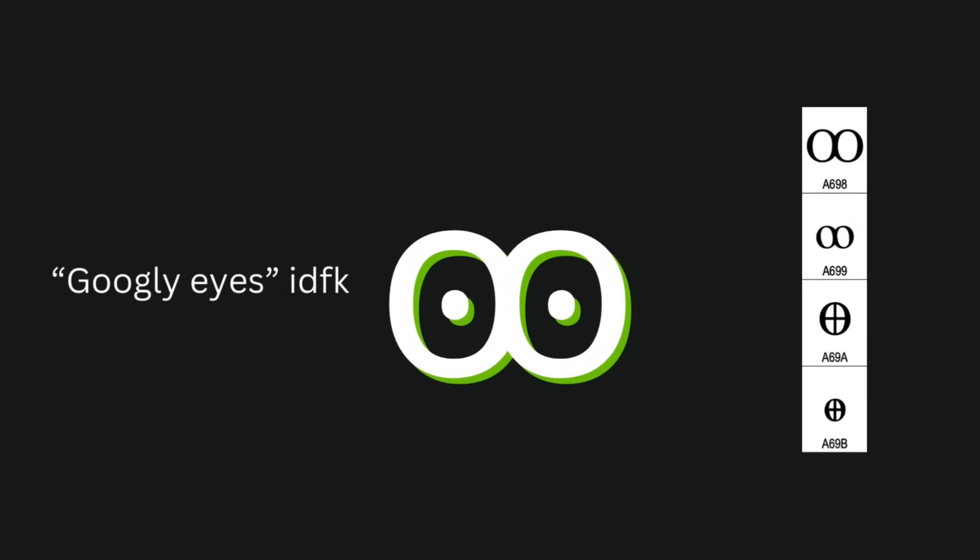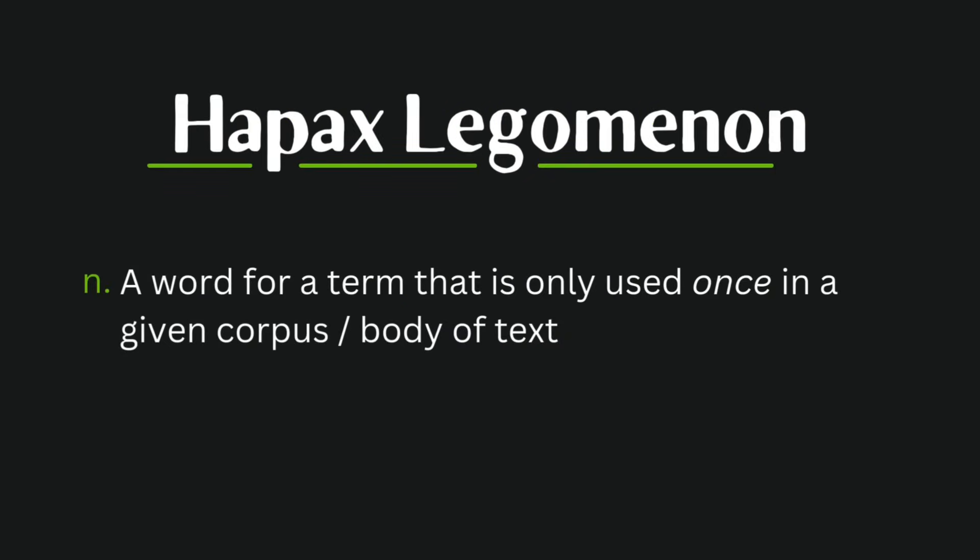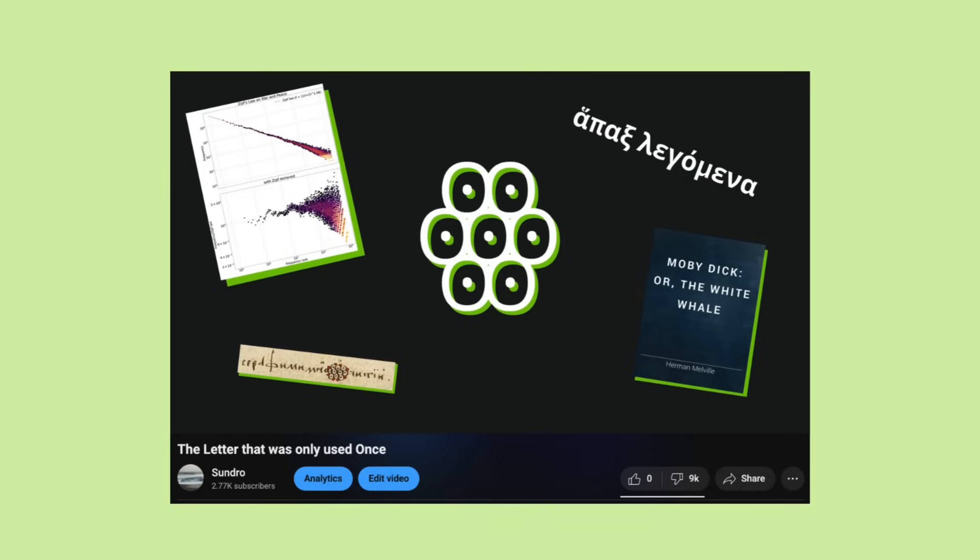But what really is the multiocular O? A hapax legomenon is used to denote a term of which only one instance of its use is recorded — either in a particular corpus, like a given book, or in history, like with the case of the multiocular O — though of course barring any metalinguistic exceptions like this exact video where we're just talking about it rather than actually using it.